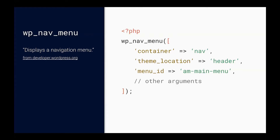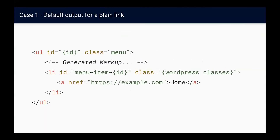wp_nav_menu is easy to use and accepts a list of arguments that provide a fair amount of customization quickly, and displays a menu as soon as the page loads. One argument I tend to change immediately is the container argument. By default, the menu will be contained by a div, which doesn't impart any structure or meaning on its own. But you can set the container to a nav element, and the final output will be wrapped in a nav tag. Browsers will then detect the tag and create an implicit ARIA role with a landmark, making it easier for screen readers to parse the document's content.